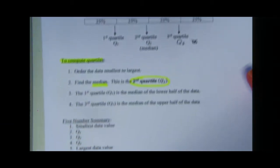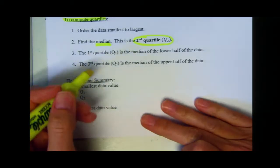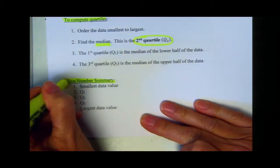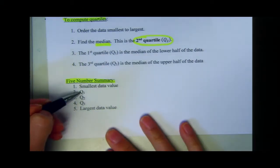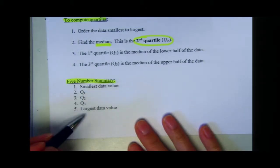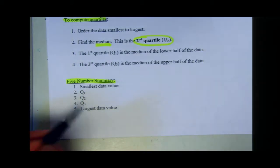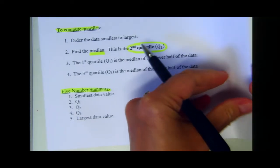When creating a box and whisker plot, we will find what is called the five number summary. We just talked about quartile one, two, and three — those three numbers are part of the five number summary. The other two are your smallest number and your largest value. Let's take a look at three examples and find the five number summary.